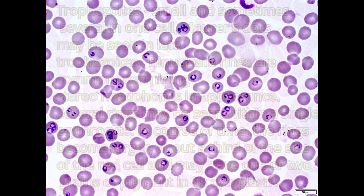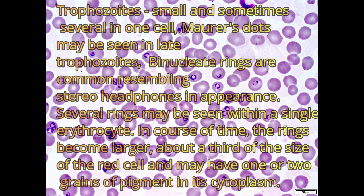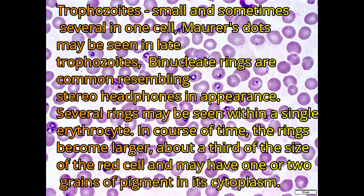Trophozoites are small and sometimes several are found in one cell. Maurer's dots may be seen in late trophozoites. Binucleate rings are common, resembling stereo headphones in appearance. Several rings may be seen within a single erythrocyte. In the course of time, the rings become larger, about a third of the size of the red cells, and may have one or two granules of pigment in each cytoplasm.